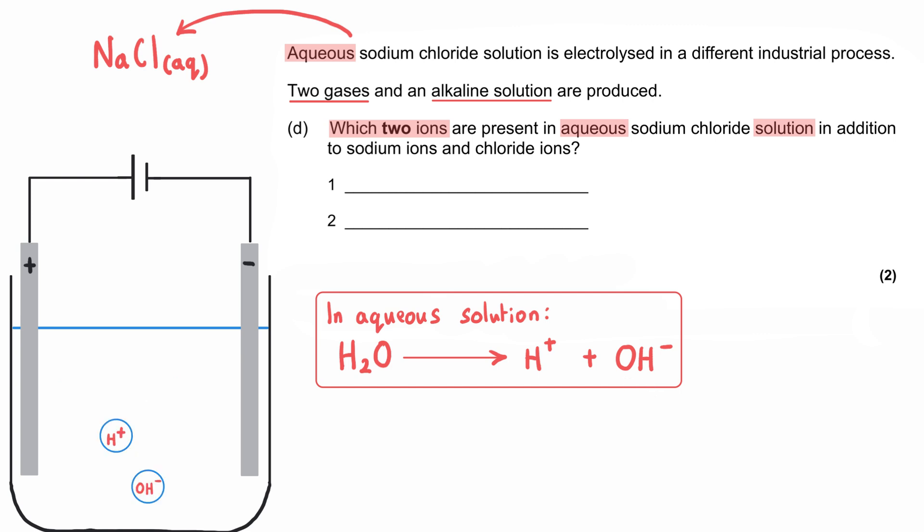This means that in any aqueous solution, along with the ions from the dissolved ionic compound, there are some hydrogen ions and some hydroxide ions. In our sodium chloride solution, we will have sodium ions and chloride ions from the sodium chloride. In addition, we will have hydrogen ions, which we could write as H+, and hydroxide ions, or OH-. These ions could be written in either order, one mark for each.